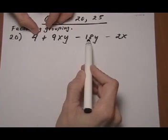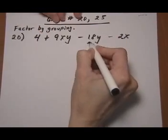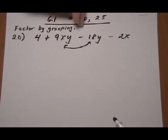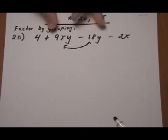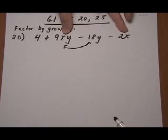So let's try if we switch the positions of the 18y and the 9xy. Because moving the 18 over here with the 4, they're going to have a common factor of two. And the 9xy next to the 2x, they're going to have a common factor of x.